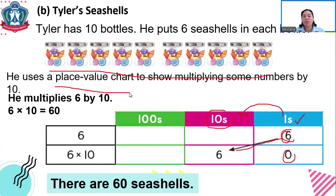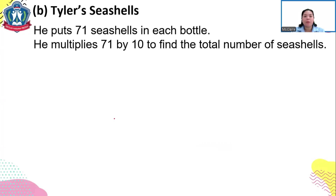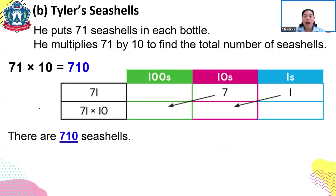We simply move the digit to the left, so the digit becomes bigger. For another example, Tyler puts 71 seashells in each bottle. He multiplies 71 by 10 to find the total number of seashells. So 71 times 10 becomes 710. The digit 1 in the ones place moves to the tens place.